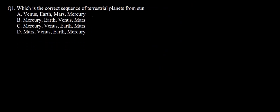So here you can see we have an MCQ with four possible answers. So let us first go through the question. Which is the correct sequence of terrestrial planets from Sun? We need to find which of these four series of four planets is the correct series from Sun.